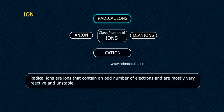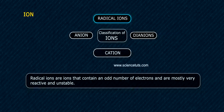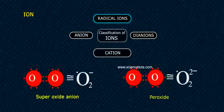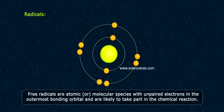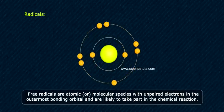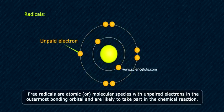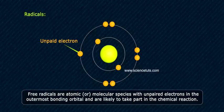Radical ions. Radical ions are ions that contain an odd number of electrons and are mostly very reactive and unstable. Free radicals are atomic or molecular species with unpaired electrons in the outermost bonding orbital and are likely to take part in chemical reactions.